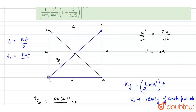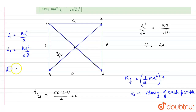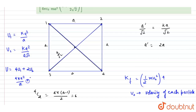There are two diagonal pairs, each with separation a root 2, contributing kq²/(a√2) per pair. That simplifies to √2 kq²/a for both diagonal pairs. So the total initial potential energy is 4kq²/a plus √2 kq²/a, giving (4 + √2)kq²/a.